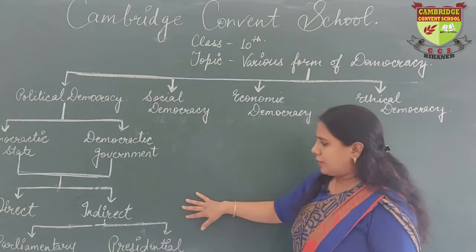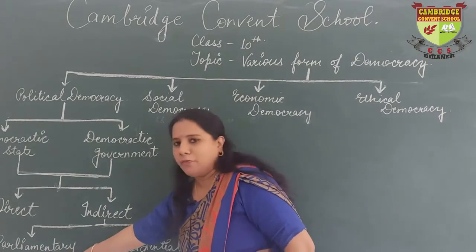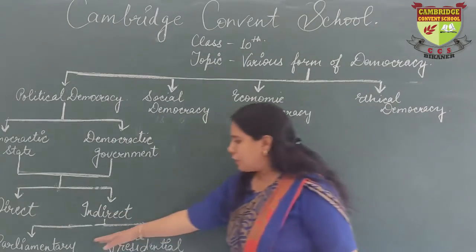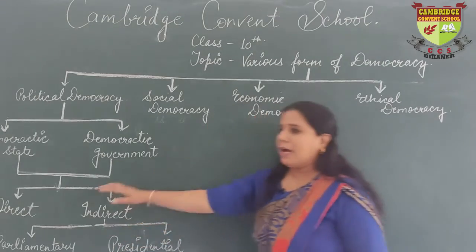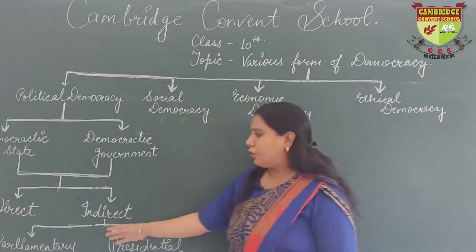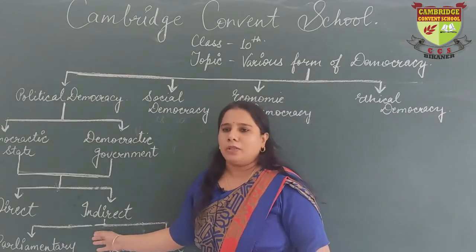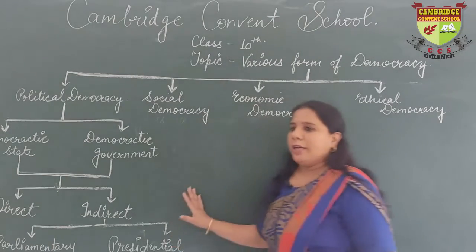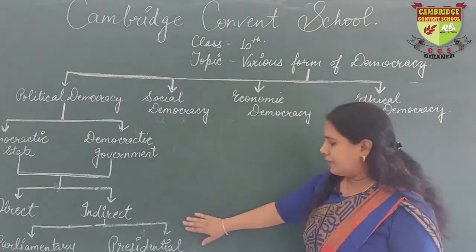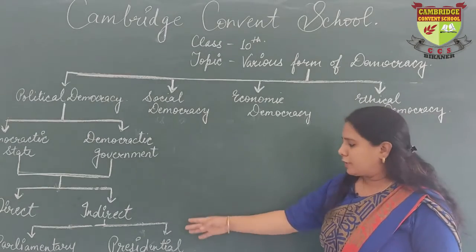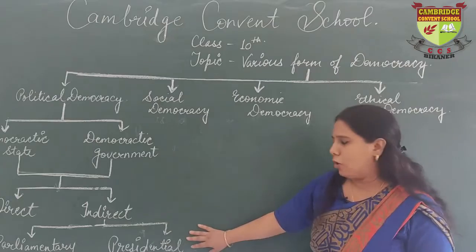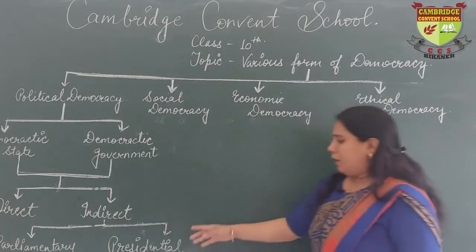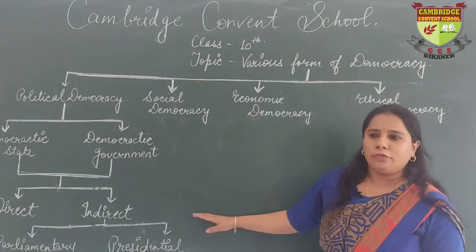Indirect democracy is further divided into parliamentary form of democracy and presidential form of democracy. In parliamentary form of democracy, the real power lies with the executive and the head of the executive is the prime minister or the chancellor. In presidential form of democracy, there is a president at the head who is both the head of the executive and the head of state. India is an example of parliamentary government, and the USA is the best example of presidential form of government.